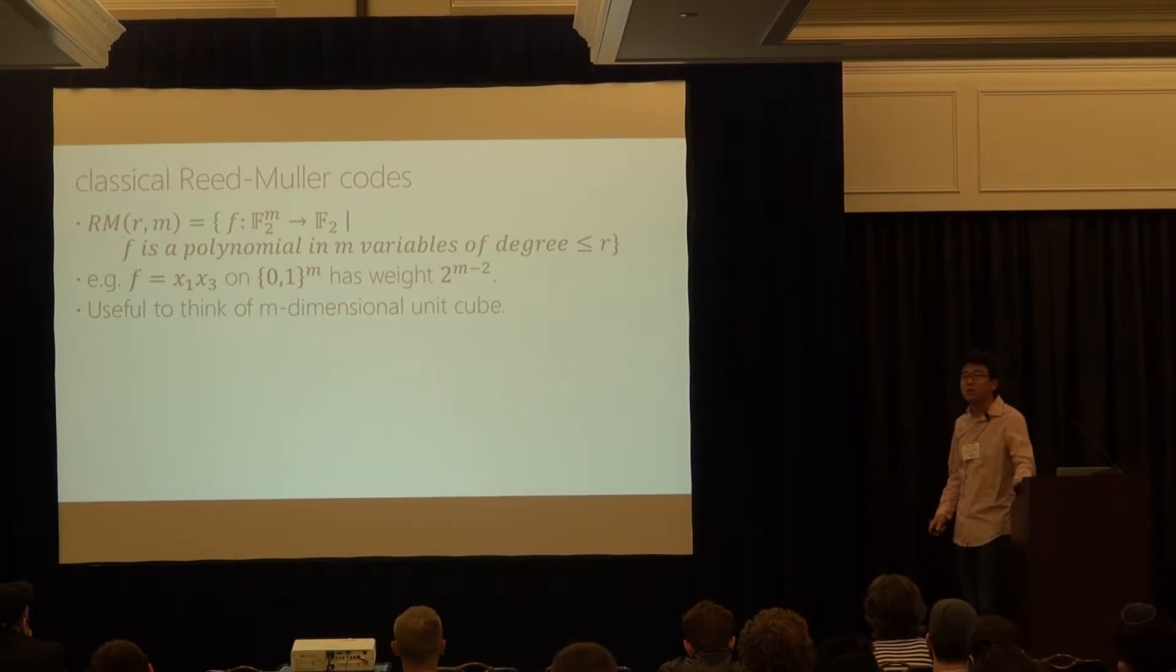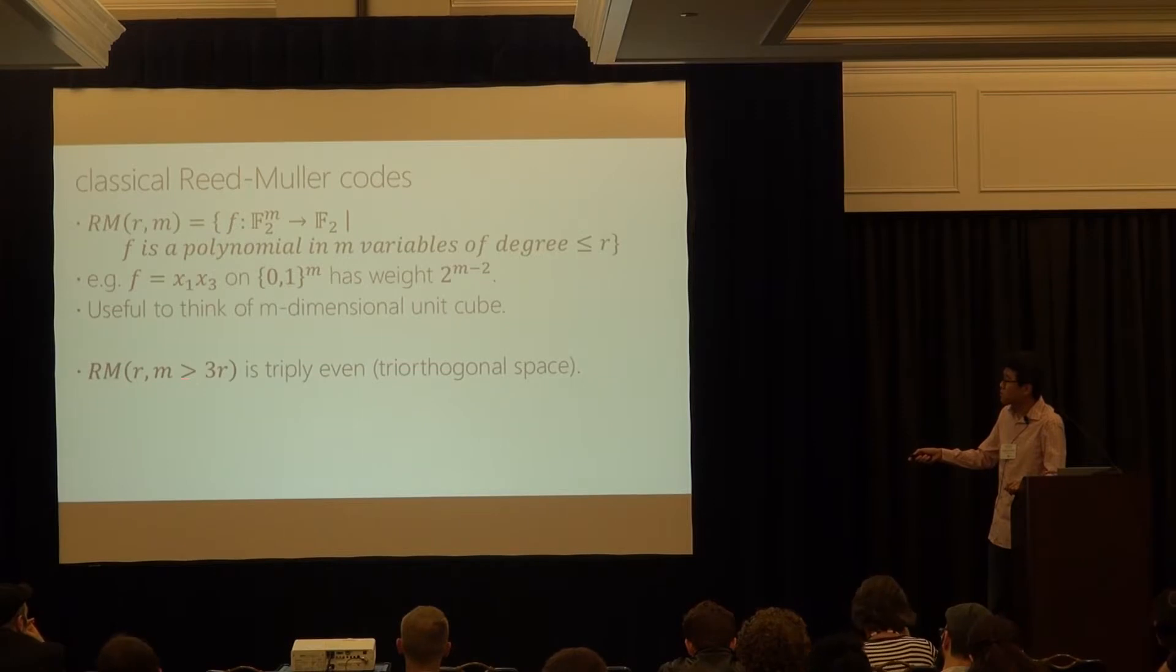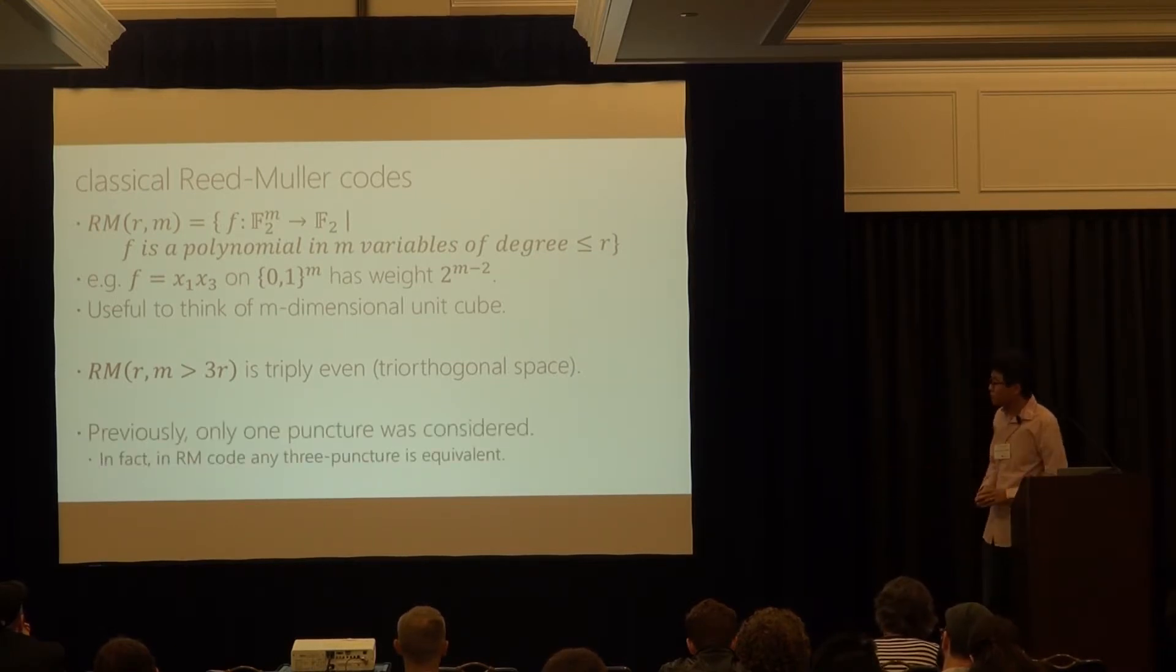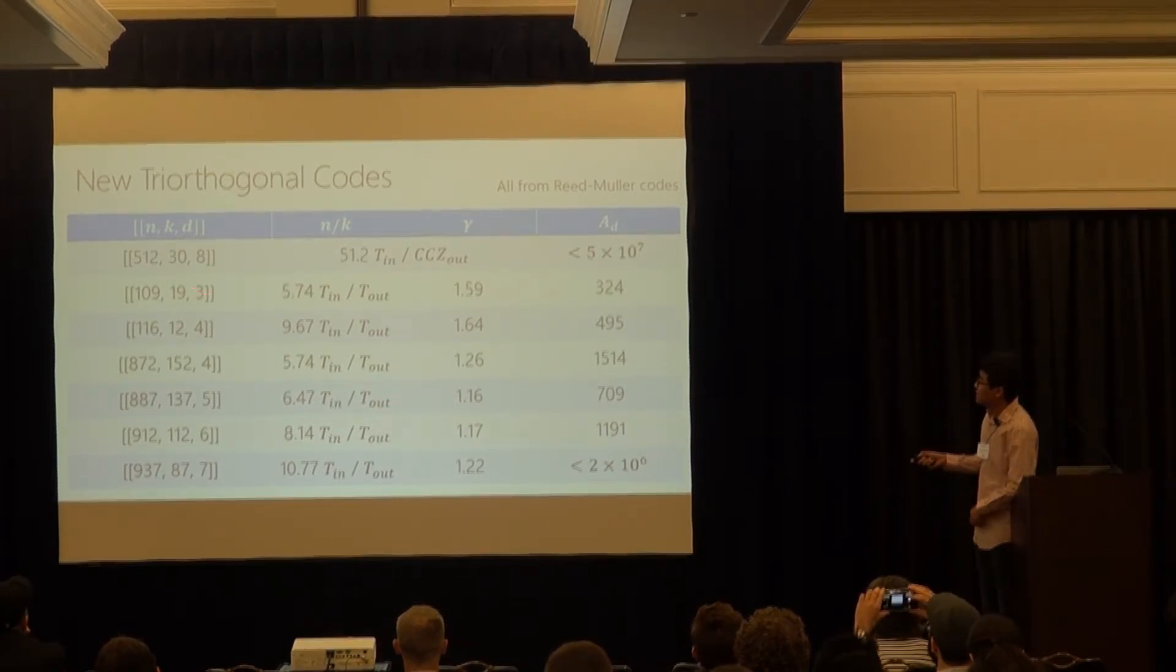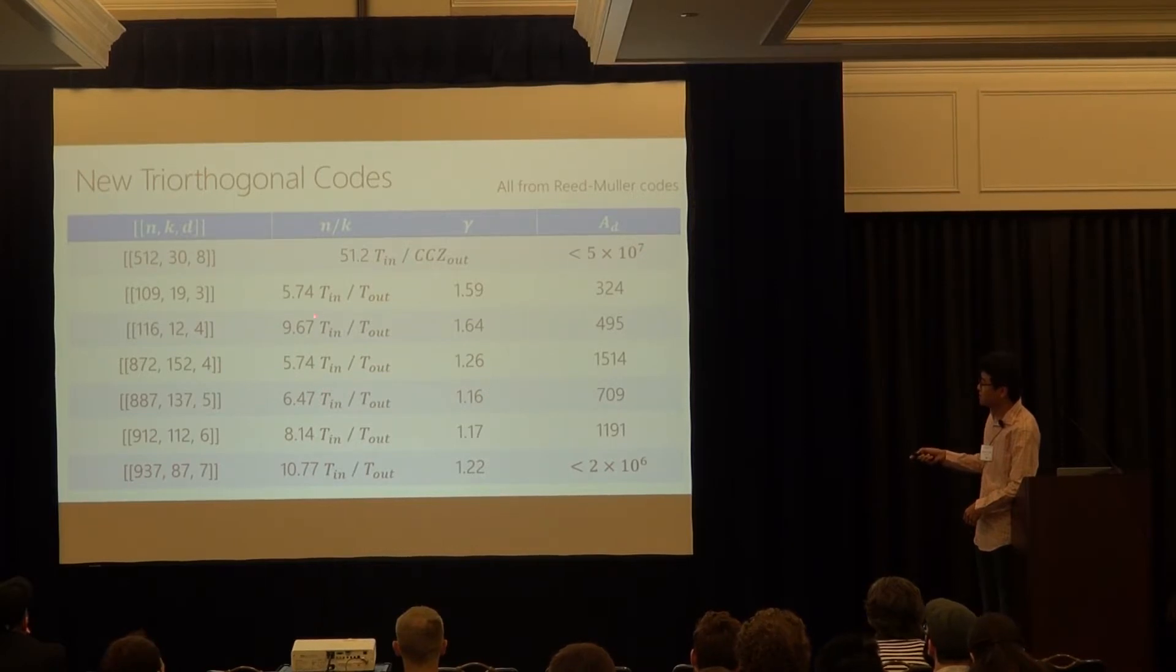And well, often it's useful to think of a hypercube in the N dimensional space. And then you think of a function assigned on that cube or labeling on that cube. And it turns out that if you choose M to be larger than the three times of R, three times of the degree, then it's always strictly even. Your code word always has weight divisible by eight. And in particular, this is triorthogonal space. Yeah. Like I said before, previously only one puncture was considered. Now we consider many punctures. Yeah. And here are some results of experiments, numerical experiment. We find several hundred qubits, the inverse rate is around 10 sometimes. Yeah. Sometimes very close to the code distance and the coefficient, meaning the number of Z logical operators that is relevant in the distillation protocol, because it determines the leading term of the error polynomial is pretty small compared to the encoding rate.